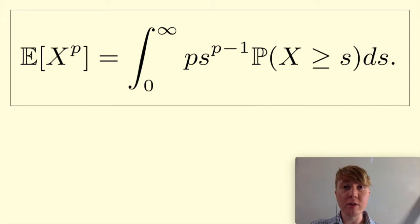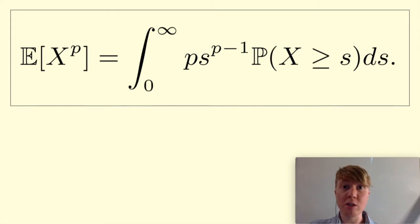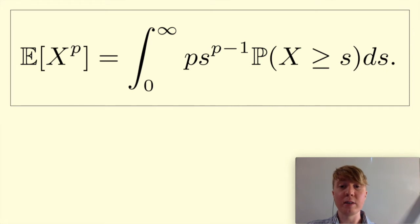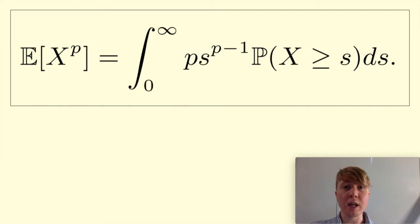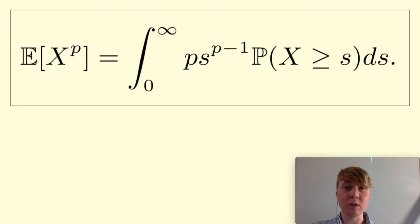We're going to have a look at this nice formula for the moments of a non-negative random variable. For any random variable that's non-negative — it can be continuous or discrete — the expectation of x to the power of p, where p is positive, can always be written as this integral: p times s to the p minus 1, multiplied by the probability that the random variable is greater than or equal to s.